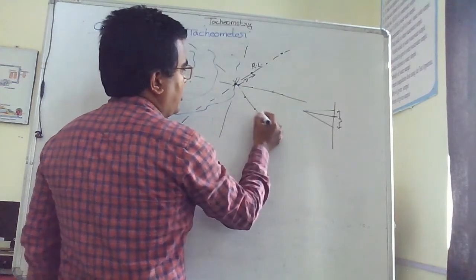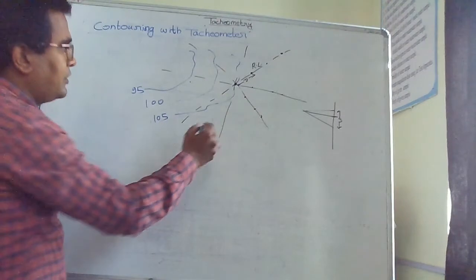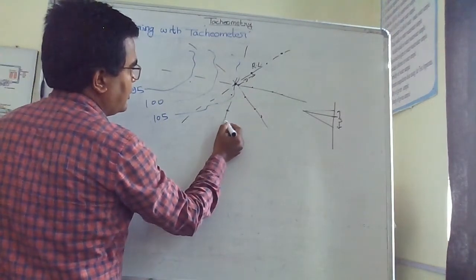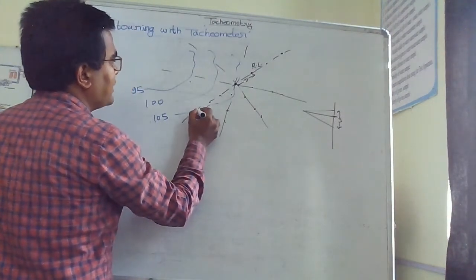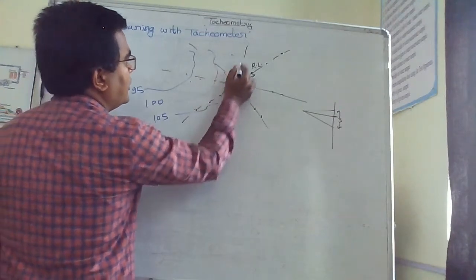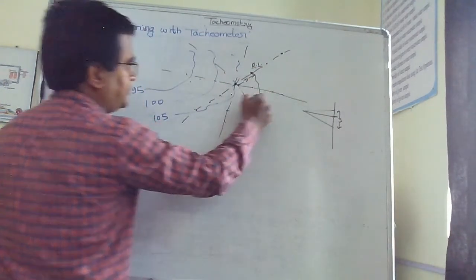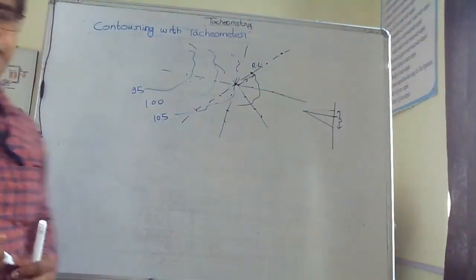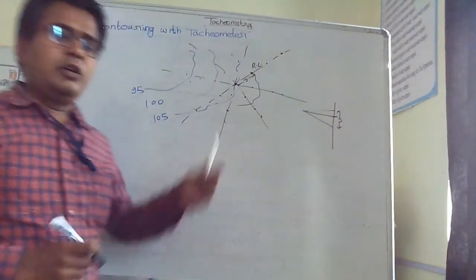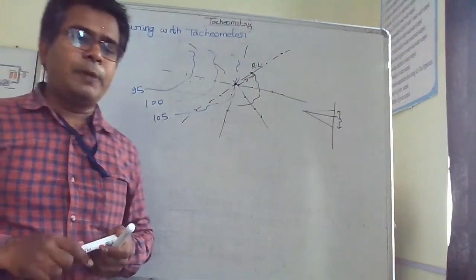On the decided lines, after knowing these RLs and distances, we can draw a contour net. This is contouring with the tachometer.